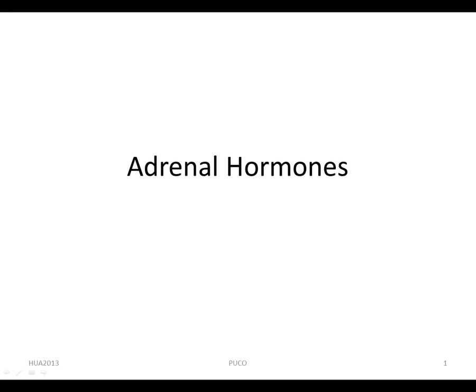Dear class, this week we're going to talk about adrenal and sex hormones. This is the first part on adrenal hormones. The adrenal glands consist of the cortex and the medulla. The medulla secretes epinephrine, whereas the cortex secretes two major classes of steroid hormones: the adrenal corticosteroids, including glucocorticoids and mineralocorticoids, and the adrenal androgens.